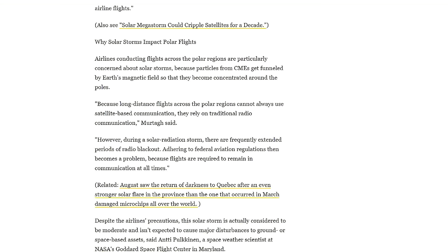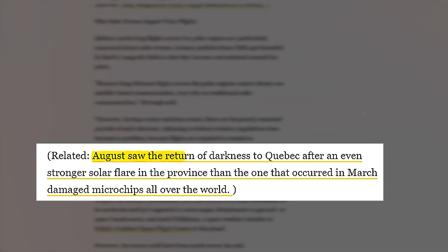Only a few months later, in August, another solar flare, even larger than the one in March, caused damage to microchips worldwide and plunged Quebec into darkness once again.